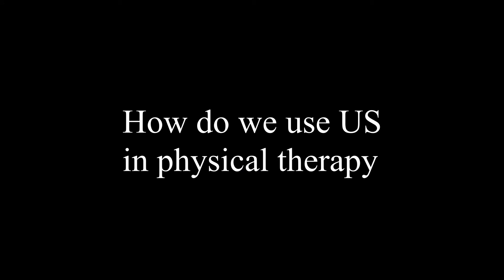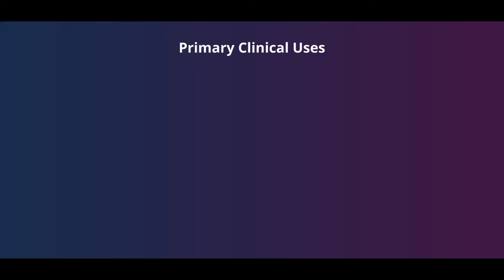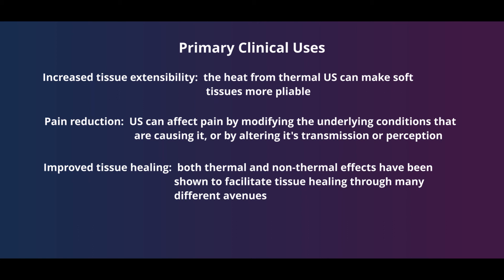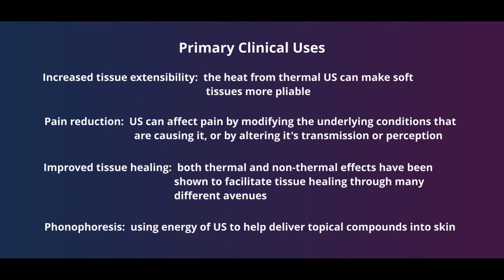So when would we choose to use ultrasound in physical therapy? We use ultrasound to achieve one of the following clinical effects: thermal ultrasound can be used to increase tissue extensibility, which is very beneficial for connective tissue that is adaptively shortened. Ultrasound can also be used to help treat pain, either by directly affecting the tissue causing the pain or by altering its transmission. Ultrasound is also commonly used to help improve tissue healing — for acute stages of injury, only non-thermal ultrasound should be used, while for more chronic injuries, both thermal and non-thermal ultrasound can be used. Finally, ultrasound can be used through a process called phonophoresis to help deliver topical compounds into the skin by changing the permeability of the skin.